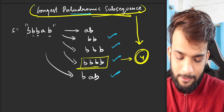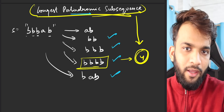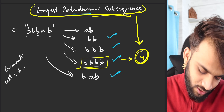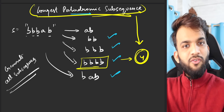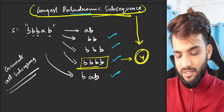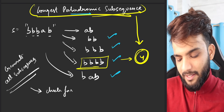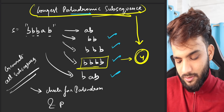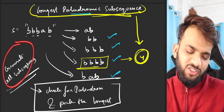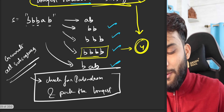The first approach that comes to mind is the generic brute force: generate all subsequences — either using a recursive method or the power set method — then check each one for being a palindrome, and pick the longest. To optimize this brute force, you'd write a recursive solution. But can we solve this using something we've already learned — LCS?